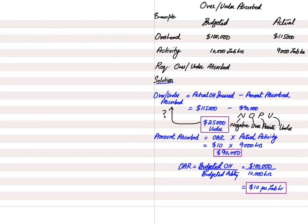If we over-absorb overhead, our costs are greater than they should be, production costs increase, and markup profit appears higher. In a competitive environment, selling goods at a higher price than competitors means quantity demanded will decrease. Conversely, under-absorption means fixed costs have not been fully recovered and we are selling at less than the optimal price, reducing potential profit.